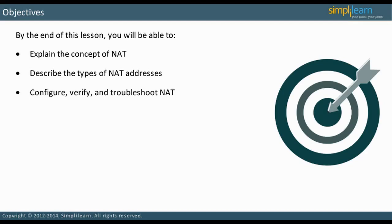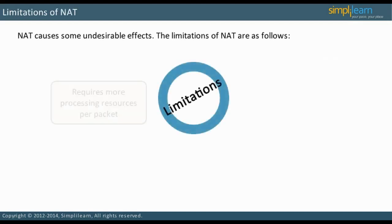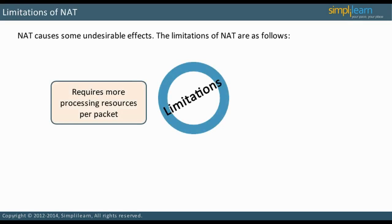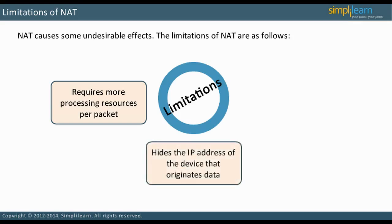Why is address translation needed at all? NAT requires more processing resources per packet. The device that performs NAT must have additional processing power and memory to minimize any delay that could be caused by NAT. NAT hides the IP address of the device that originates data. This is an advantage when hiding an address from someone outside the LAN, providing better security. However, it also is a disadvantage — for a network administrator, the lack of traceability makes it harder to troubleshoot.